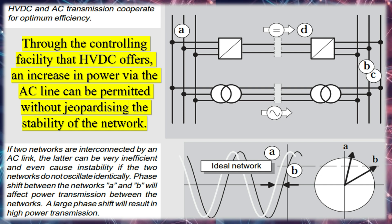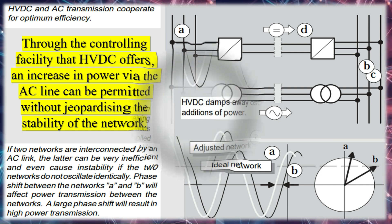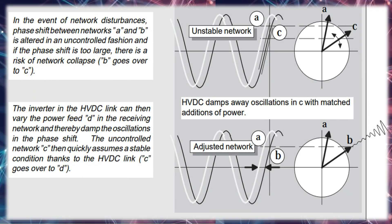Harm to animals and plants caused by the electric and magnetic fields of high-voltage lines is not known and is also not expected from HVDC lines. However, direct effects of electricity such as electric shocks are possible.